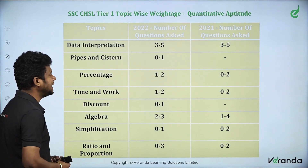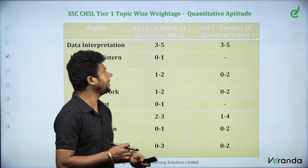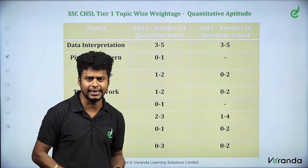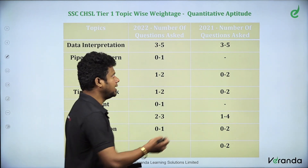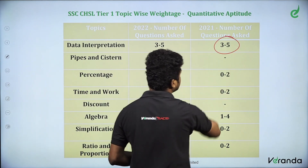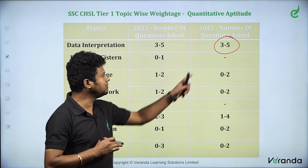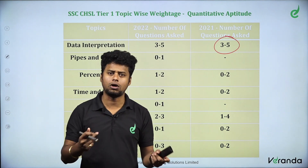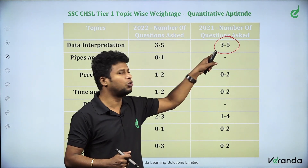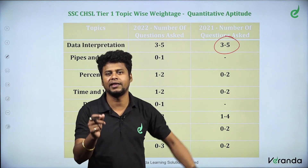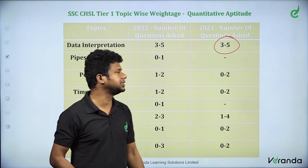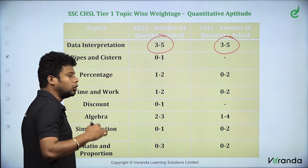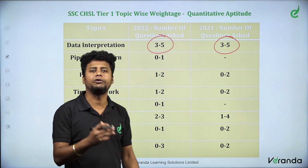The first topic is Data Interpretation. Data Interpretation is one of the important topics if you go for any SSC exams — that is CGL and CHSL. You will see around 5 questions on this topic. We will see the number of 3 to 5 questions on each topic. In 2022, there were 3 to 5 questions, and in 2023, there were also 3 to 5 questions.